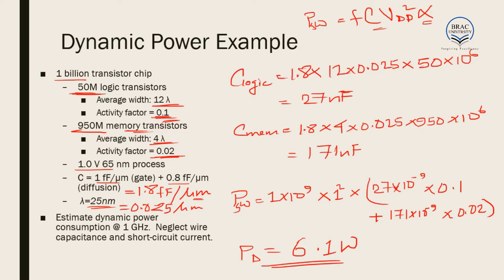It is noted that 1 GHz is the clock frequency applied here, and the short-circuit current has been neglected. As a result, the entire dynamic power equals the switching power.